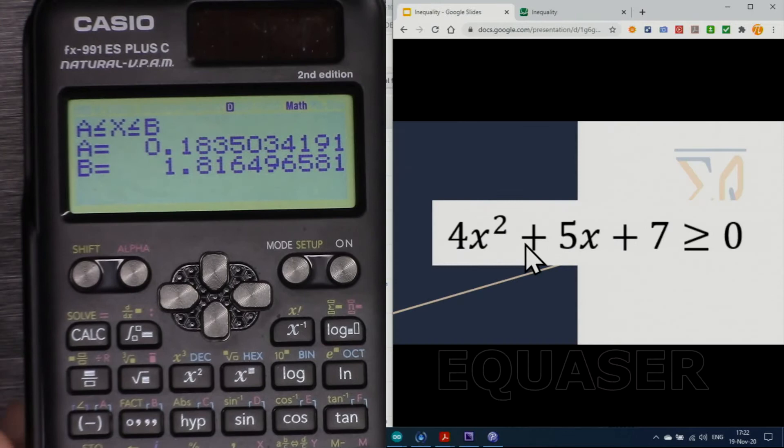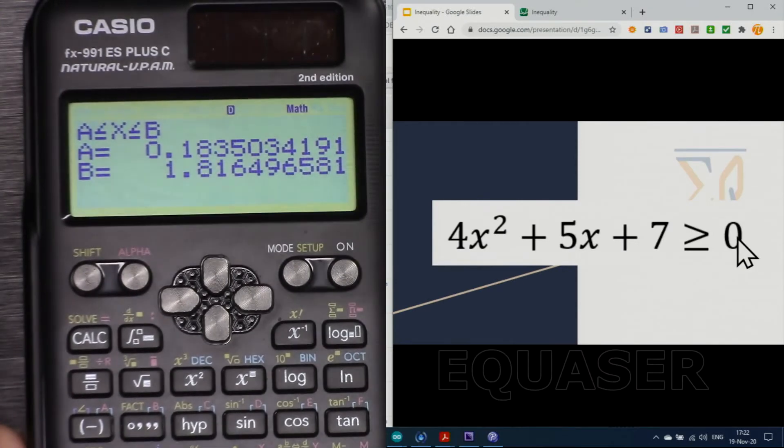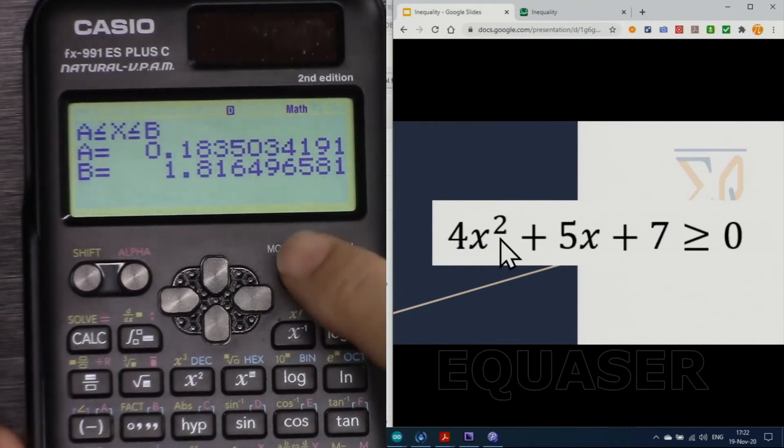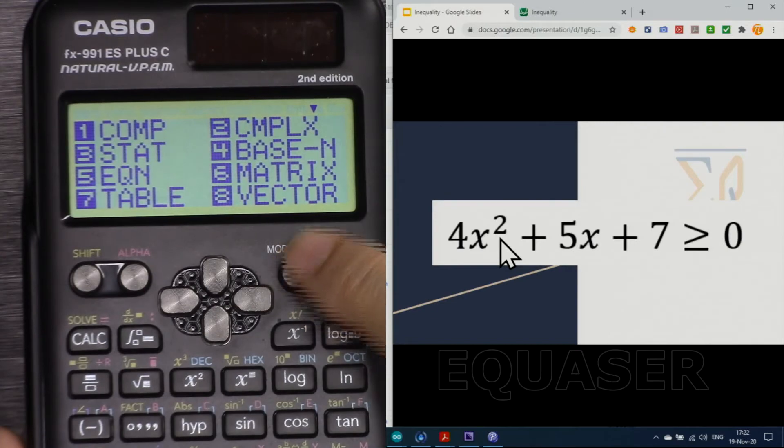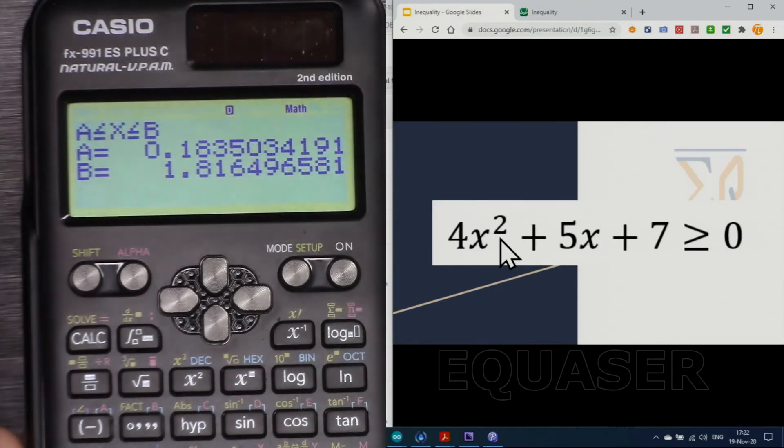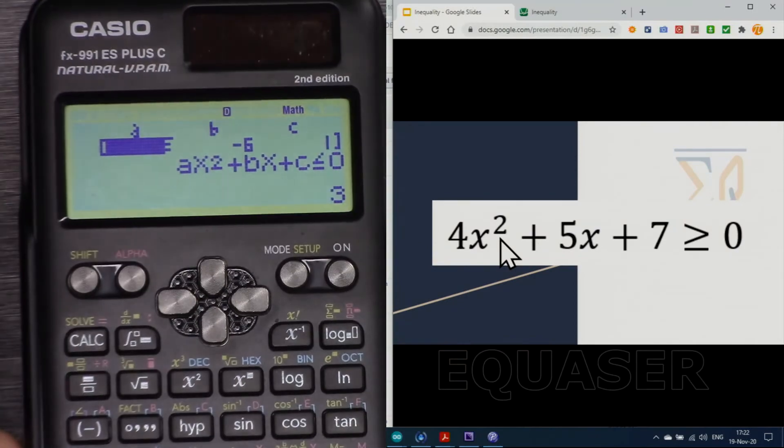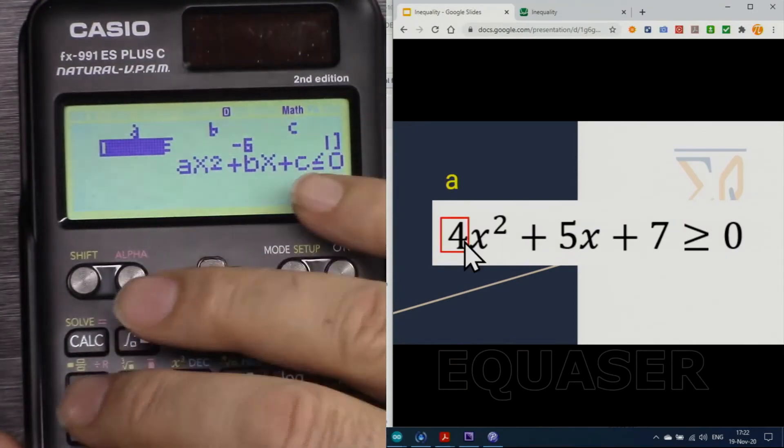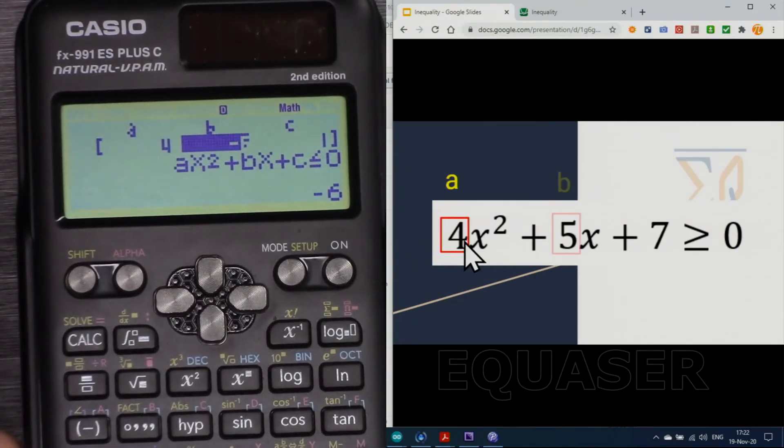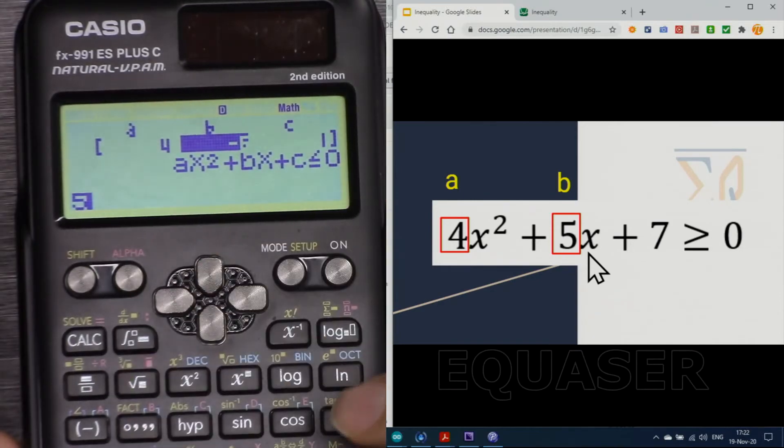And this time our function is greater than 0, but it is also quadratic. So let's go, and we can press equal because we have the same function. Now put 4 for a, for b 5, and then equal.